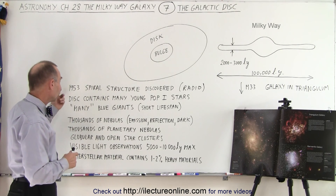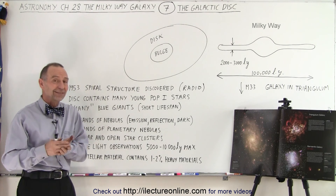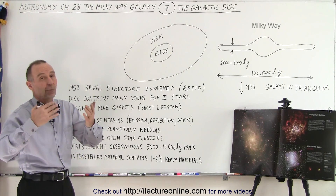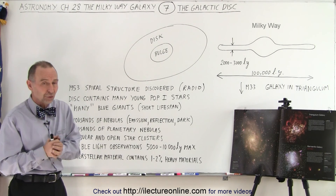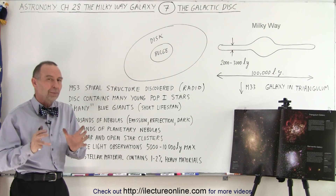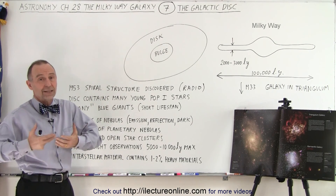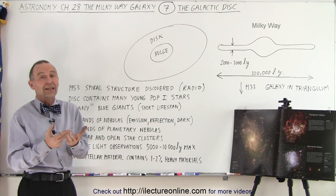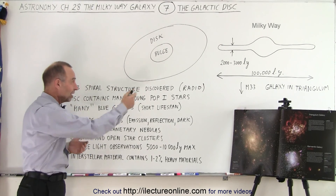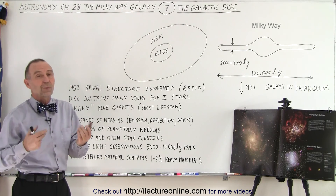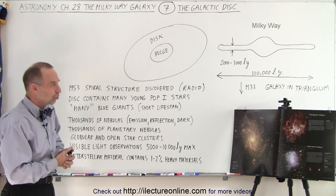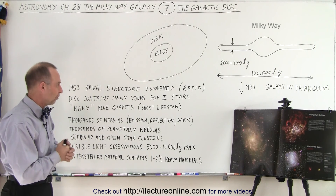We didn't discover that the Milky Way galaxy had a spiral structure until recently. For almost 200 years through telescopes, we saw objects we thought were spiral nebulas. We now realize they're actually galaxies. And since the onset of radio astronomy, we realized that our own galaxy was also of a spiral structure — it was a spiral galaxy.